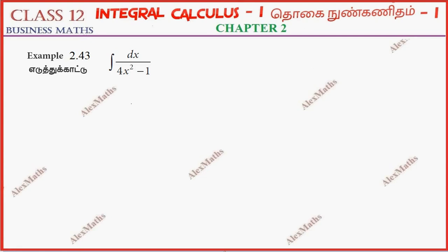Hi students, this is Alex here. Example 2.43: integrate dx by 4x squared minus 1.